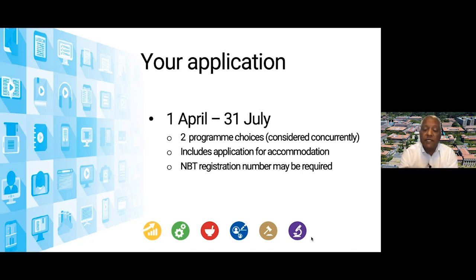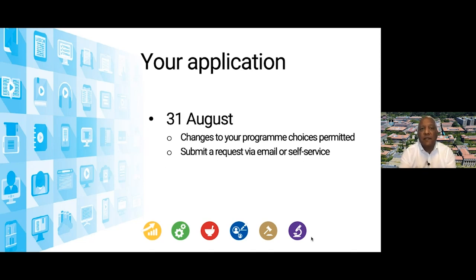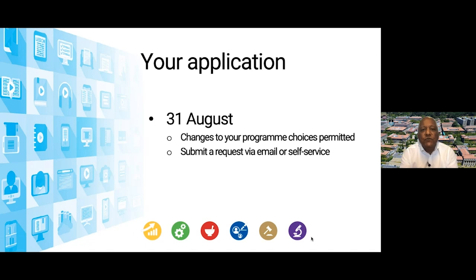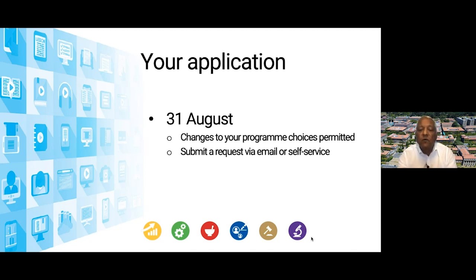When you submit your application, you may be required to submit your NBT registration number. Most undergraduate applicants will be required to write the National Benchmark Tests, and the registration number for whenever you choose to write the test is required when applying to UCT. Another key date in the application cycle is 31 August — one month after the closing date — by which you need to submit any request for changes to your program choices. After 31 August, that is no longer your prerogative.